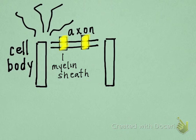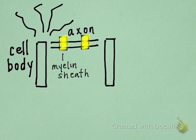The myelin sheath is extremely important because damage or deterioration of the myelin sheath results in slow or non-existent communication between neurons. The disease called multiple sclerosis, or MS, is a result of the deterioration of the myelin sheath. As a little bonus fact, the gap between the myelin sheaths is called the nodes of Ranvier, which is not illustrated in this drawing.